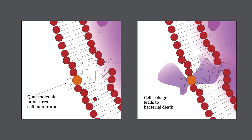Quats work by puncturing the cell membrane, as depicted here. Once punctured, the cell loses vital fluids and begins to die.